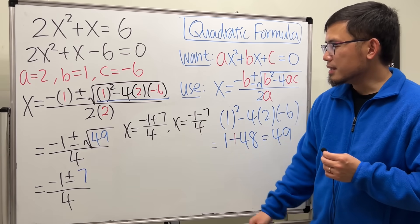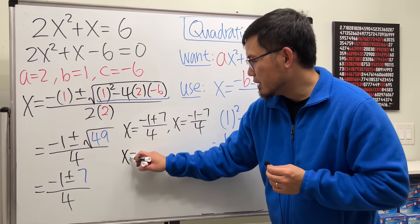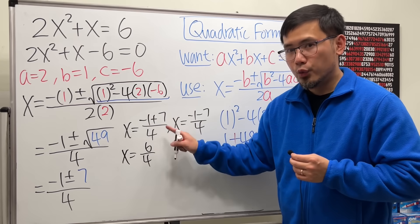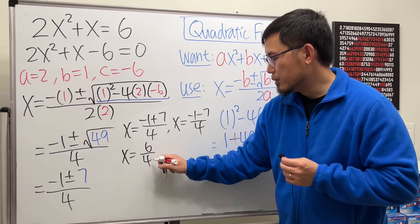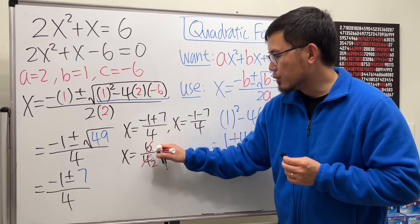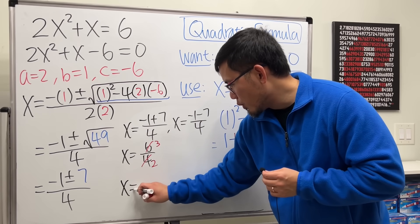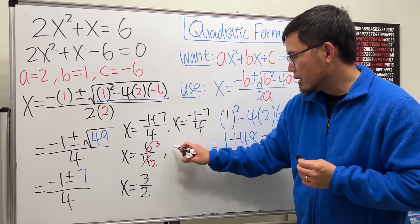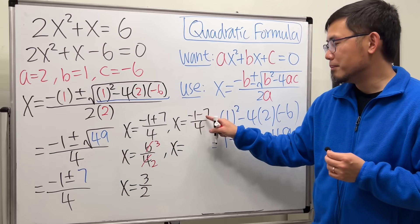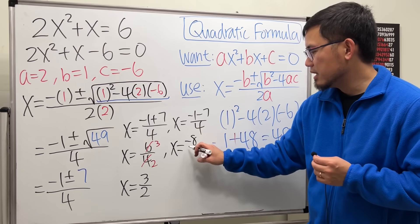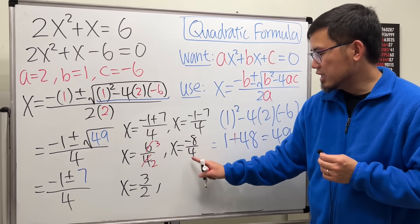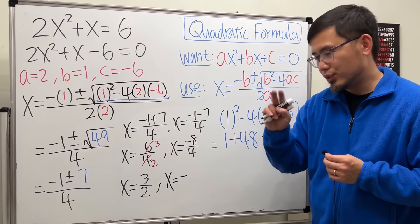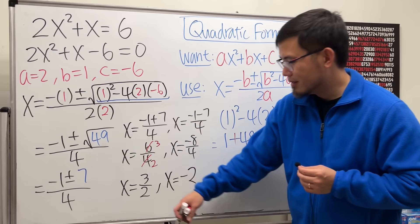Alright. So let's work this out first. x will be negative 1 plus 7 is positive 6 over 4. Reduce this. Divided by 2, right? 2 goes into 4 two times and 2 goes into 6 three times, so x equals 3 over 2. That's the first answer. And then for the second answer, negative 1 minus 7 is negative 8 divided by 4. Negative divided by positive is negative. 8 divided by 4 is 2. So the second answer is negative 2. Got it.